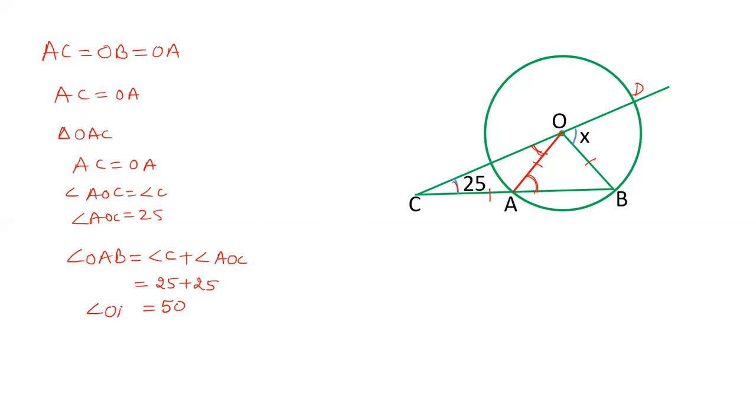In triangle OAB, OA equals OB. Therefore angle OBA equals angle OAB. Angle OAB is 50 degrees, therefore angle OBA is also 50 degrees.